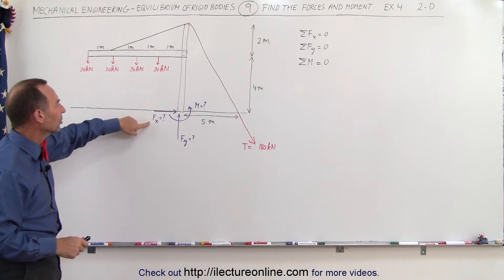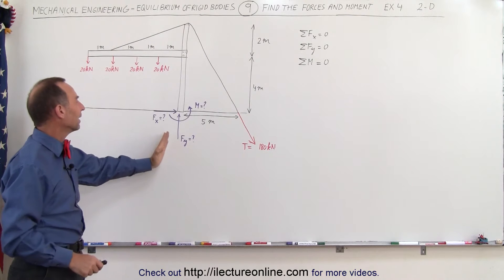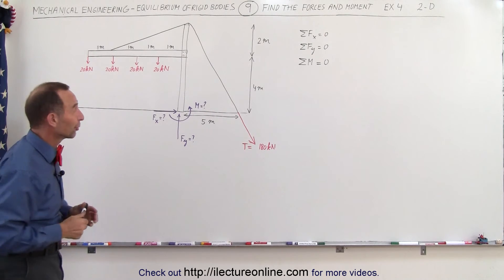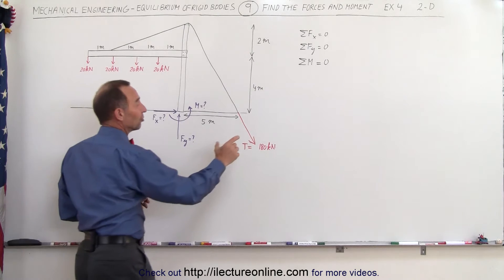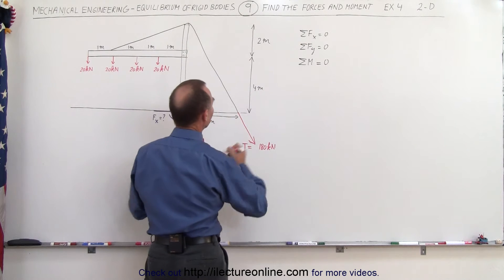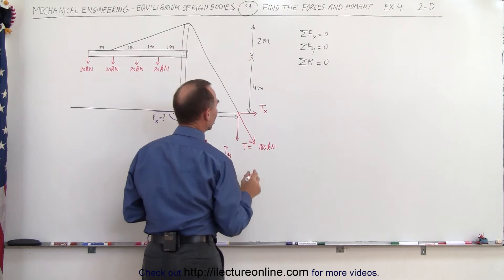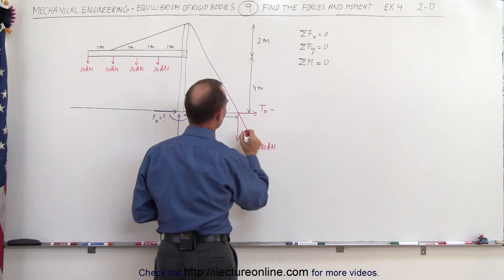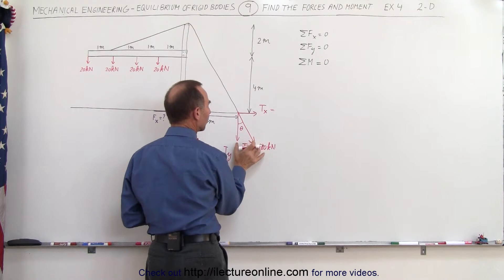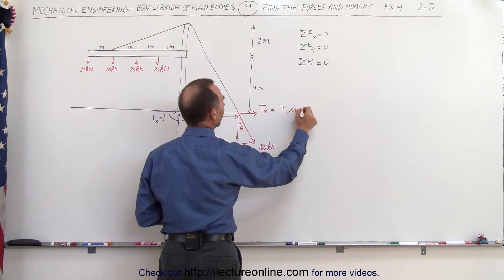To find all forces in the x direction, we need to sum all forces in the x direction. The four vertical weight forces won't contribute anything in x. We need to find the x and y components of the cable tension. We have tension in the x direction and tension in the y direction. If we call the angle theta, then T_x would be the tension times the sine of theta.